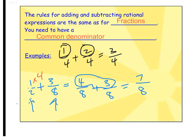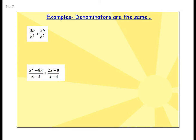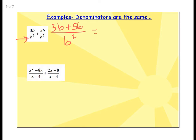It's going to be similar when we add rational expressions — we're just dealing with expressions instead of numbers. Starting with examples where denominators are already the same: we have 3b over b squared plus 5b over b squared. Since both have a denominator of b squared, I put the tops together: 3b plus 5b over b squared, which simplifies to 8b over b squared. Canceling one b gives a final answer of 8 over b.